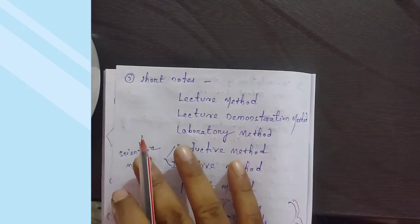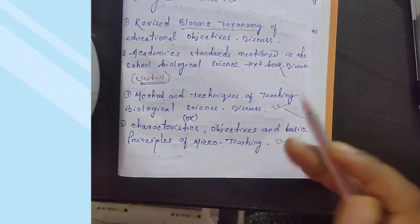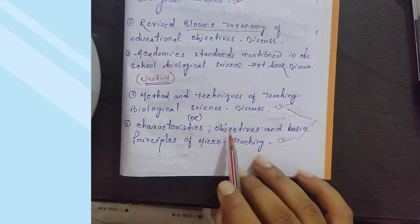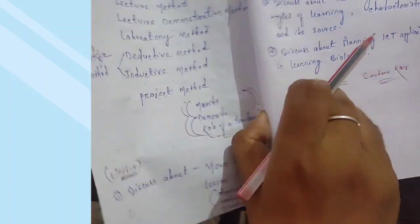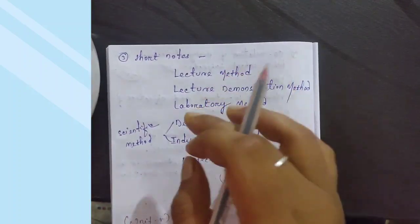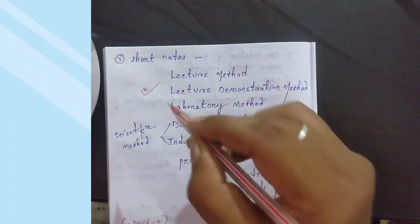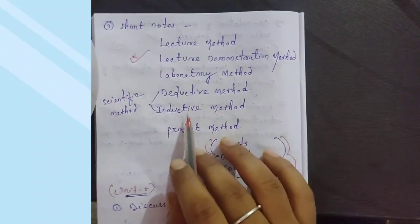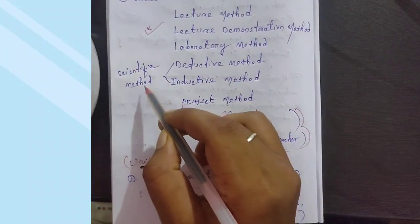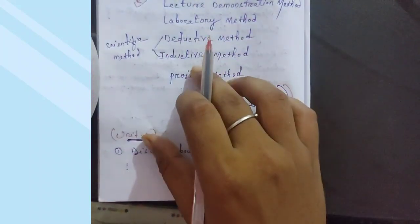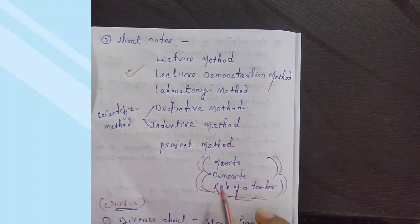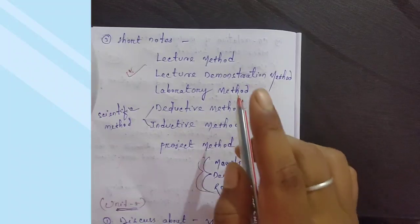Unit 4 has short notes, but there are chances for long questions too. Meaning, concept, characteristics, and objectives of micro teaching - this is compulsory, so prepare long questions. Short notes include lecture method, lecture demonstration method, laboratory method, deductive and inductive methods - deductive method or scientific method - and project method. Check which methods are exam relevant. For each method, cover merits, demerits, and the role of teachers.